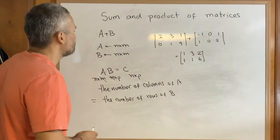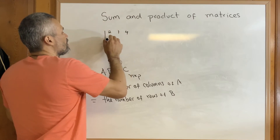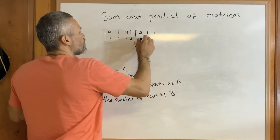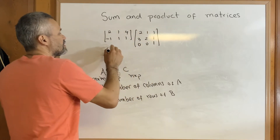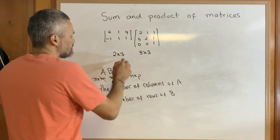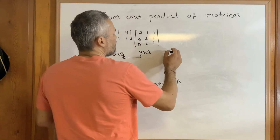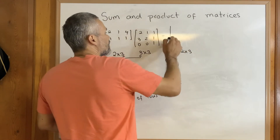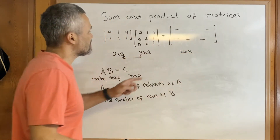Let's do an example. We have the matrix [2, 1, 4; -1, 1, 1] times [2, 1, 1; 3, 2, 1; 0, 0, 1]. This is a 2 by 3 and this is a 3 by 3. Since these two numbers are the same, the product makes sense, and the answer is going to be a 2 by 3 matrix. We need to find six numbers.